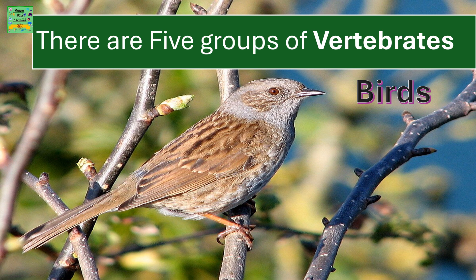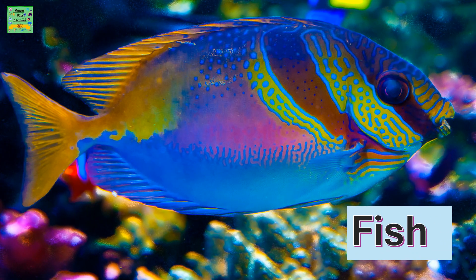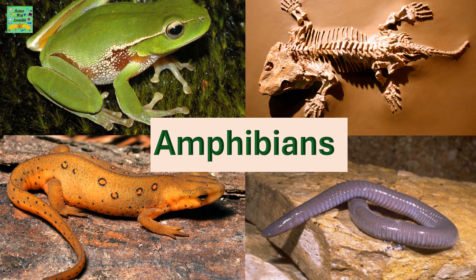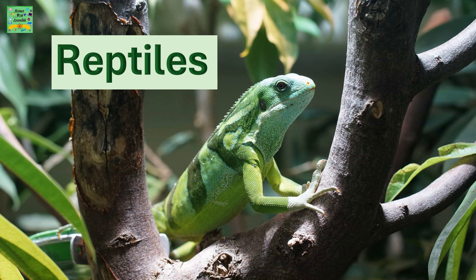There are five groups of vertebrates. First, they are birds — birds are vertebrates. The second group is fish. Amphibians such as frogs are also a group of vertebrates. Lastly, reptiles are also a type of vertebrate.